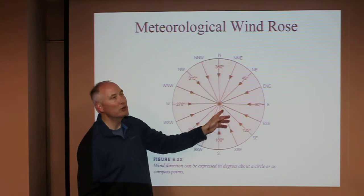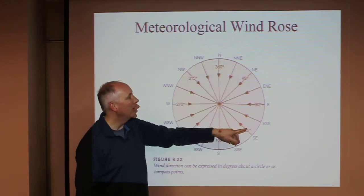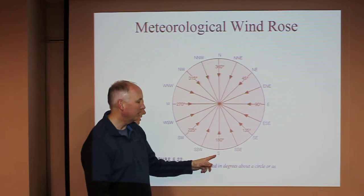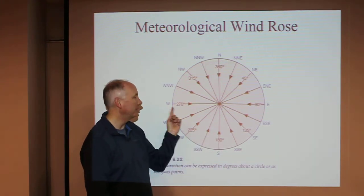So we describe a wind that's coming from the north as a northerly wind, a wind coming from the east as an easterly wind, a wind coming from the south as a southerly wind, etc.